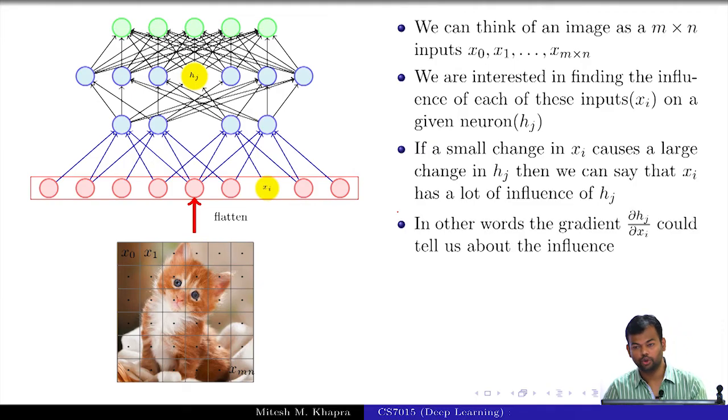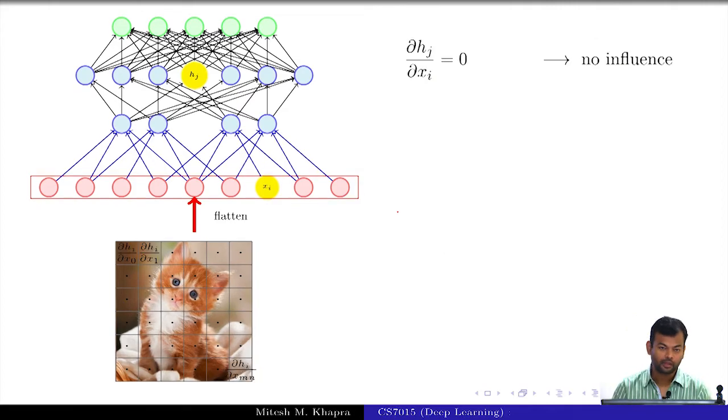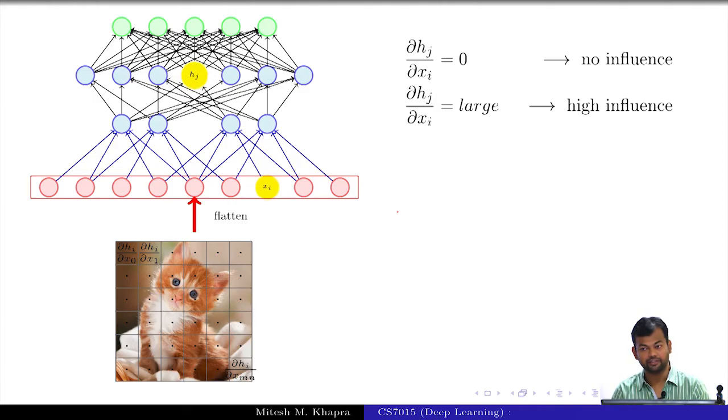So, let us see. If I want to compute ∂h_j/∂x_i, I can see that if ∂h_j/∂x_i is 0, that means this pixel has 0 input on the neuron. If it is large, then it has a high influence. If it is small, then it has a low influence.